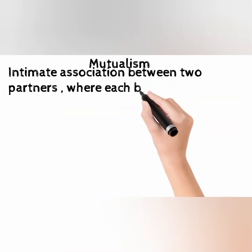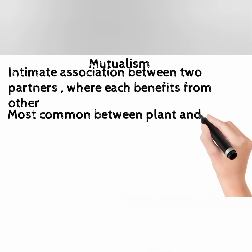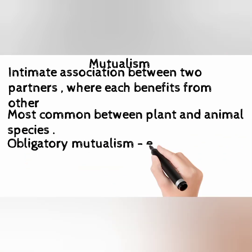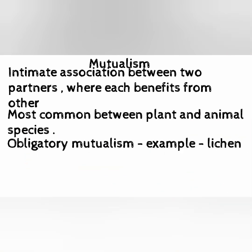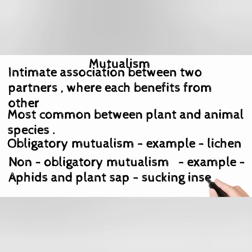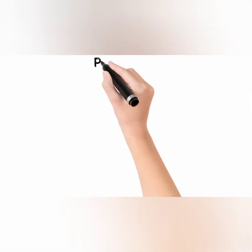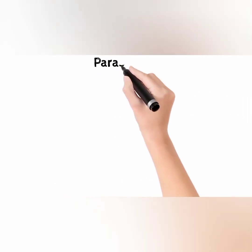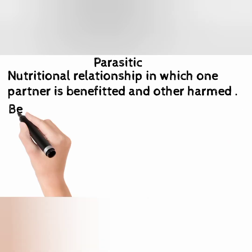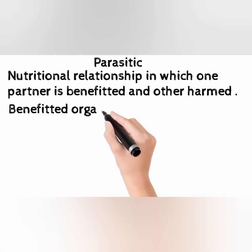Mutualism is an intimate association between two partners where each benefits from the other. It is most common between plant and animal species. Obligatory mutualism example: lichen. Non-obligatory mutualism example: aphids and plant sap-sucking insects.